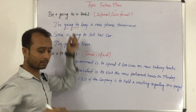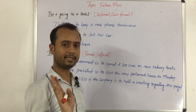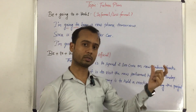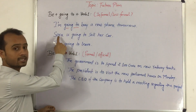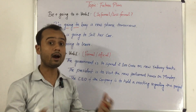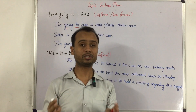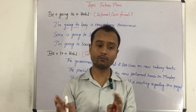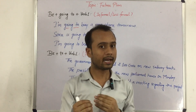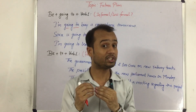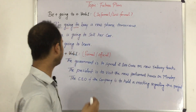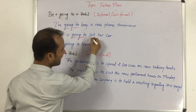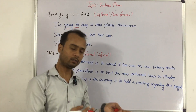Is 'going to' ka matlab 'ja raha' wala nahi hai — it means future plan. The second example is: 'Sarah is going to sell her car.' So Sarah apni car bechne wali hai, bechne ko hai. She has decided — matlab usne decide kar liya hai, uska iradha hai, she has intentions. So iske liye hum use karenge 'Sarah is going to sell her car.'